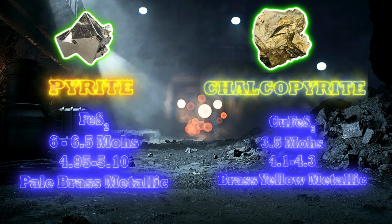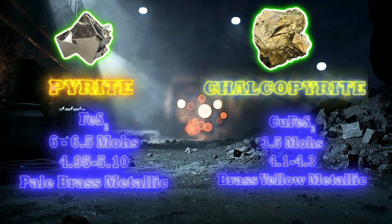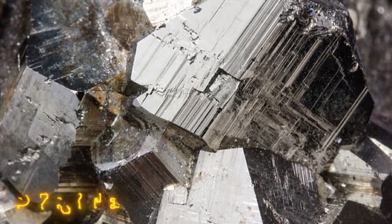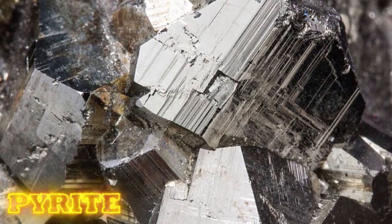Pyrite is clearly harder than chalcopyrite on the Mohs scale, and there is a slight difference in color. Pyrite also has a greater specific gravity. Nevertheless, there are other more visual ways to distinguish both of these minerals.